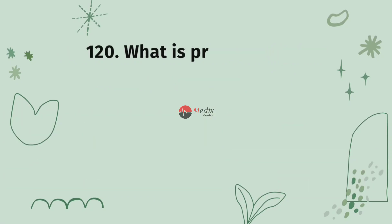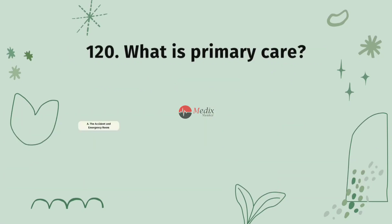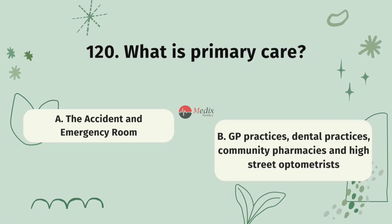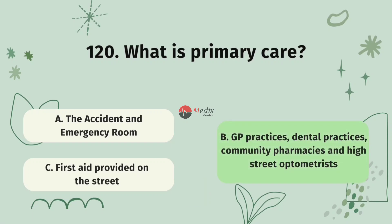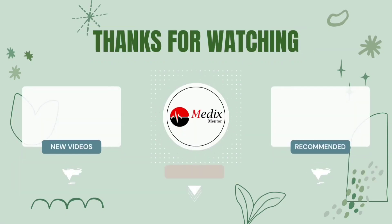Question 120. What is primary care? Option A, the accident and emergency room. Option B, GP practices, dental practices, community pharmacies, and high street optometrists. Option C, first aid provided on the street. The correct answer is B.